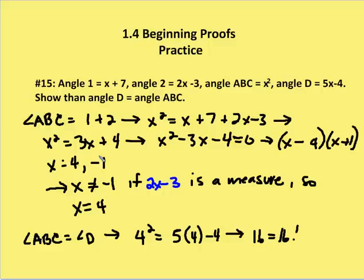So negative 1 cannot be a solution for x. Positive 4 can be a solution, and that's the only other solution we have left.